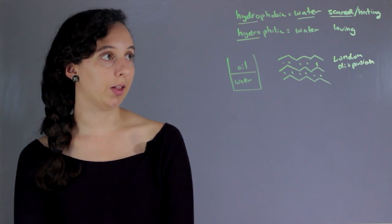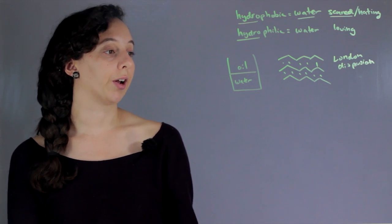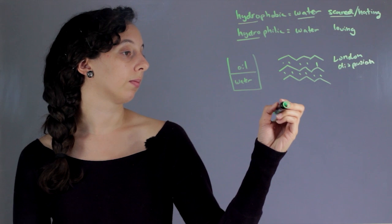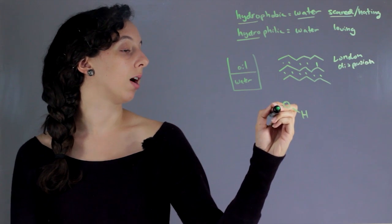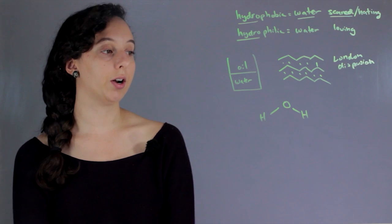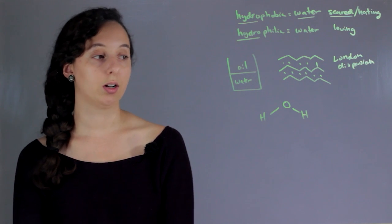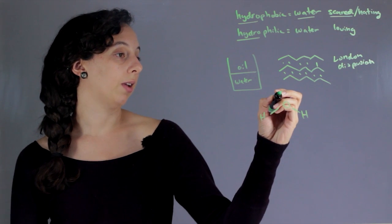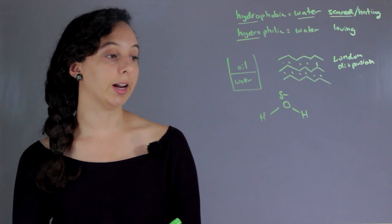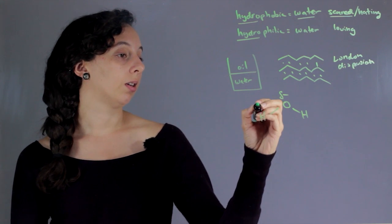Now let's look at something hydrophilic. And we can actually look at water for this case, even though water is what we're talking about. So now water is composed of oxygen and hydrogen. And oxygen is electronegative, which means it's partially negative. And hydrogen is partial positive.